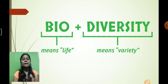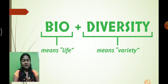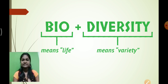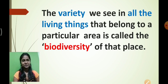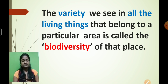What is the meaning of biodiversity? Bio means life, and diversity means variety. So biodiversity means life variety. The variety we see in all the living things that belong to one particular area is called biodiversity. Let's say the example of a cat — not all cats in the world look the same. There are different varieties of cats, so biodiversity exists in the cat category also.